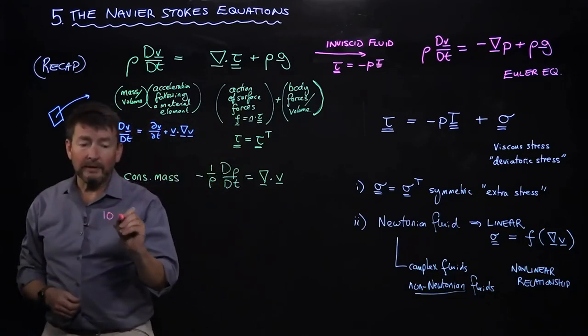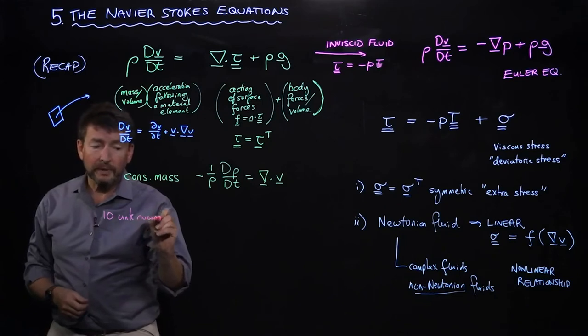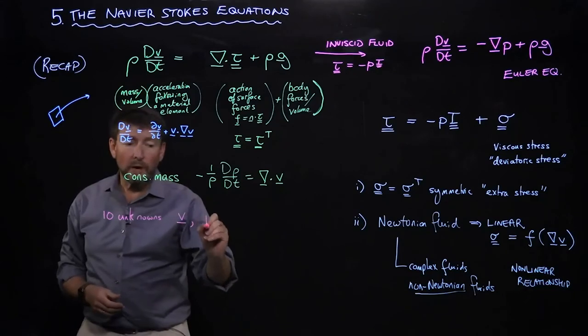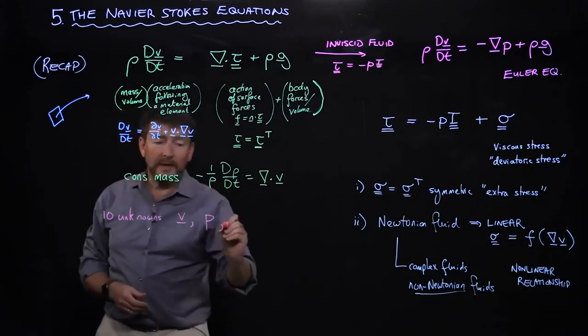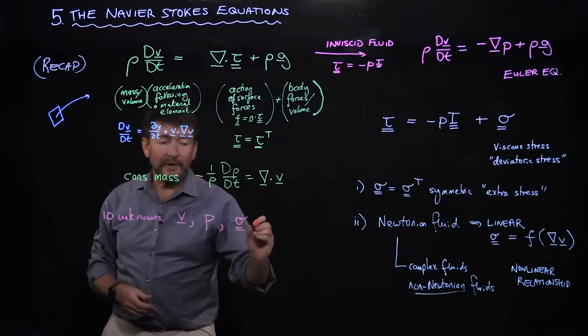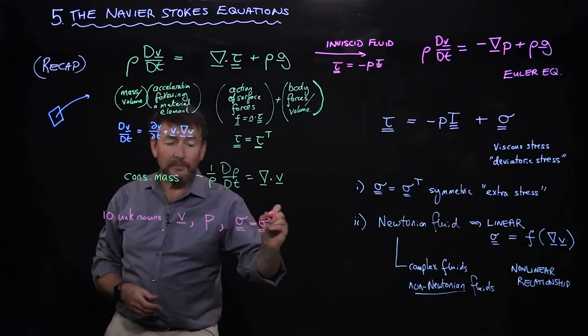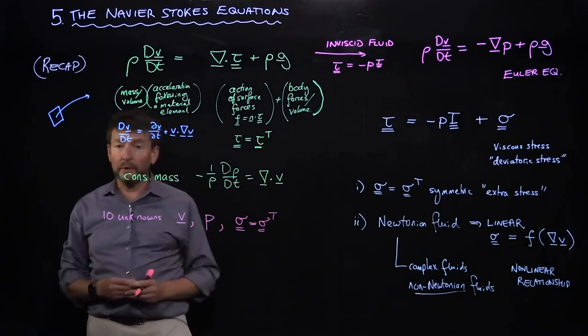The ten unknowns that we have are the three components of velocity, one component of our scalar pressure, and then six components of our stress tensor, which is equal to its transpose. That'll give us ten equations to solve. That's a very complicated set of equations, and what we'd like to do is eliminate the stress from this expression by substituting.